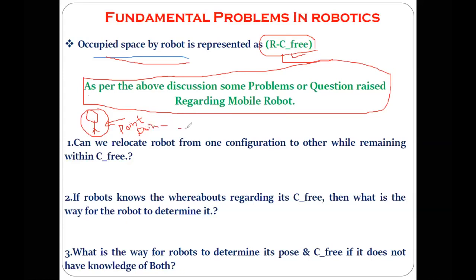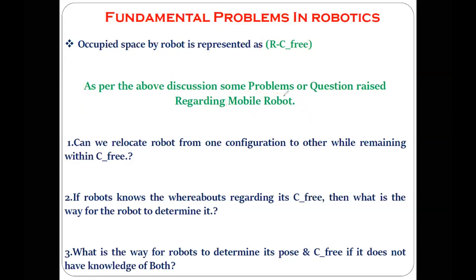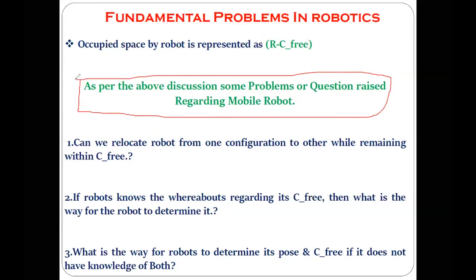But when the robot starts moving from one position to another position, we can also call it a mobile robot. If you consider the robot moving from one location to another location, different questions arise — or problems arise — that have to be solved.